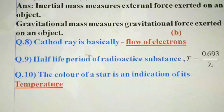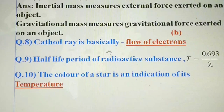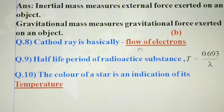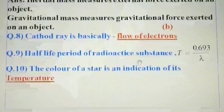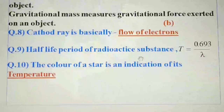Next — cathode ray is basically a flow of electrons.